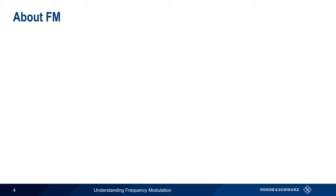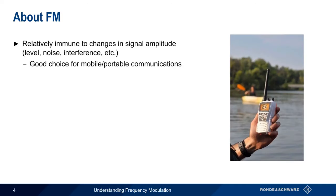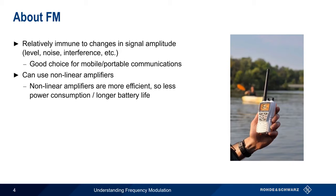Frequency modulation offers quite a few advantages over other forms of analog signal modulation. Because FM transmits information as changes in frequency, it's relatively immune to changes in signal amplitude, such as those caused by fluctuations in the received signal level, noise, interference, etc. This makes FM a good choice for mobile or portable communications, where the RF and propagation environment may be rapidly changing. And since amplitude is not used to convey information, FM can also use non-linear amplifiers, whose efficiency provides an advantage in terms of power consumption and thus longer battery life. This is important for portable operation.